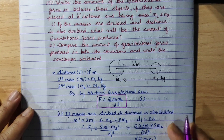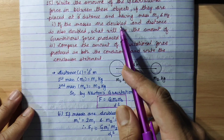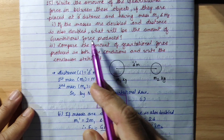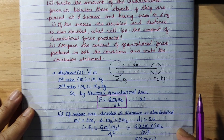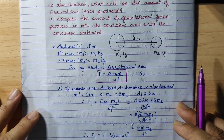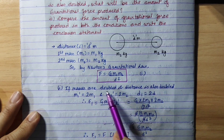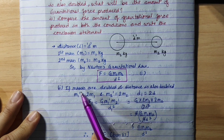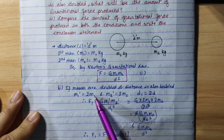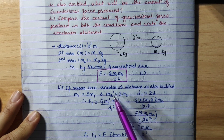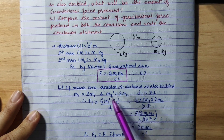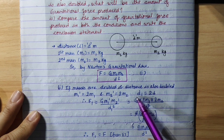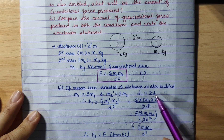In the new condition, the mass is doubled and the distance is also doubled. So, m1' = 2m1, m2' = 2m2, and the new distance d1 = 2d. That is what we have done.